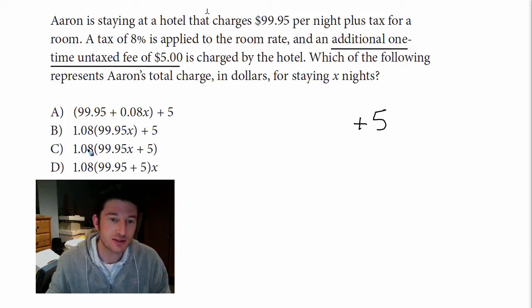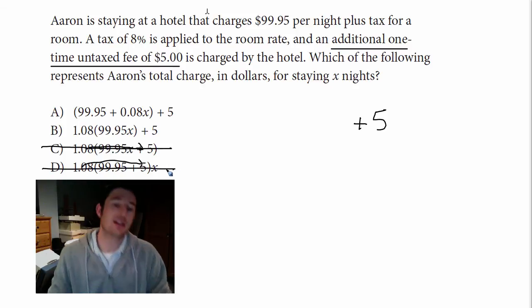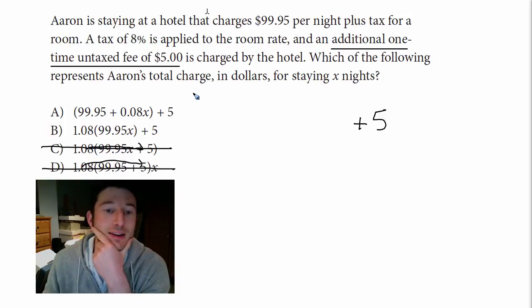I can get rid of C because this 108 is going to multiply by that 5. Gone. I can get rid of D for the same reason. This 108 is multiplying by 5. So that's kind of nice. C and D are automatically gone.